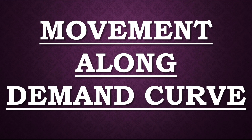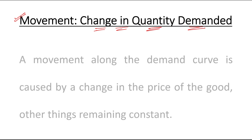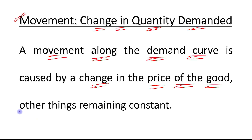Today's topic is movement along the demand curve, also referred to as change in quantity demanded. A movement along the demand curve is caused by a change in the price of the good, other things remaining constant. We have already talked about factors affecting demand in previous videos, where the first factor was price of the good itself. When price changes, other factors such as price of related goods, income of the consumer, and taste and preference are assumed constant.